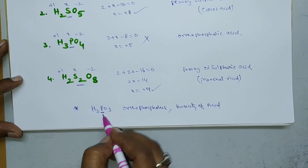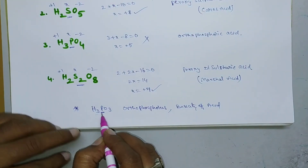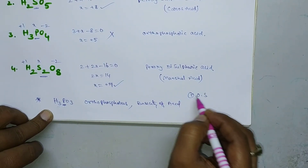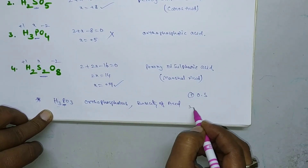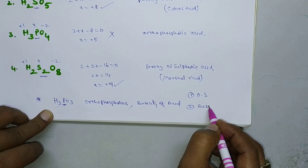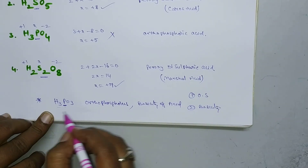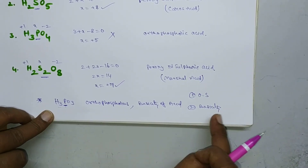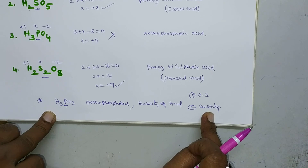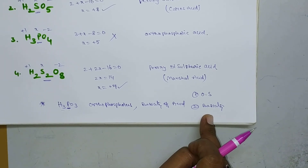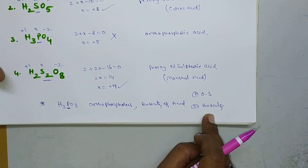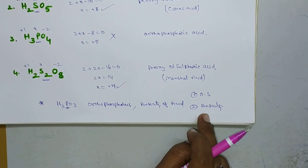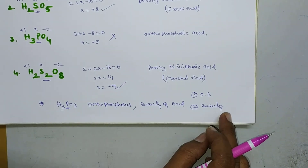So the two questions are: first, calculate the oxidation state of phosphorus in H₃PO₃, and second, what is the basicity of H₃PO₃? Please like the session, share it, and subscribe to my channel. Don't forget to leave a comment. Thank you.